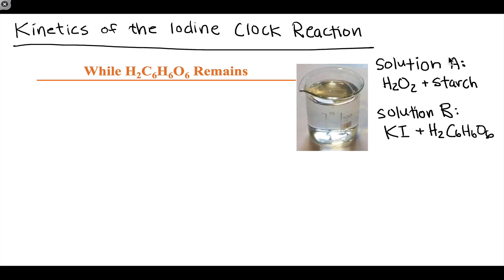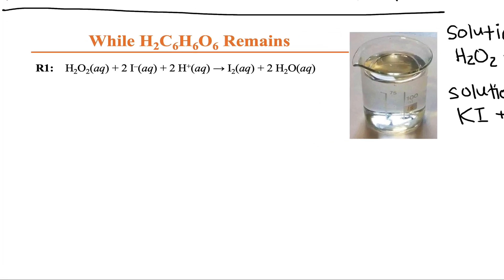To initiate the reaction, we mix some volumes of solution A and B, sometimes with some deionized water to dilute one or the other of the solutions as well. Initially, the reaction mixture will appear clear. This is a photo I took of one of the iodine clock trials that I ran. Initially, while ascorbic acid remains in the solution, it will have this colorless appearance.